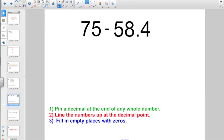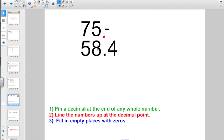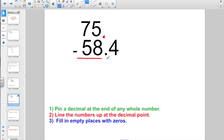Let's try this one again. I'm going to take the whole number 75 and subtract 58 and 4 tenths. So let's go and pin a decimal point on the end of the whole number. Even if the book has them written horizontally, we're going to set them up vertically, lining them up nice, neat, and straight at the decimal point.